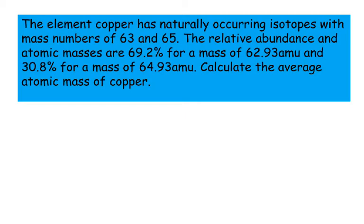Calculate the average atomic mass of copper. Okay, so we need to do the percentages. So 69.2 times by the masses times by 62.93.